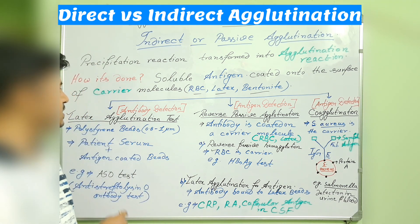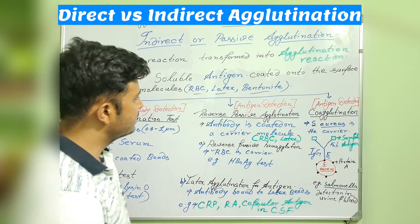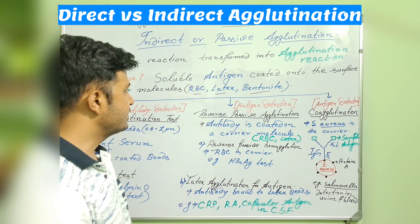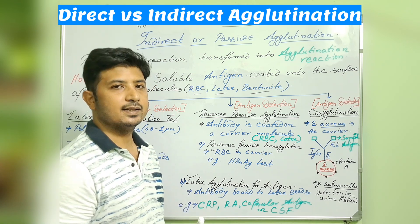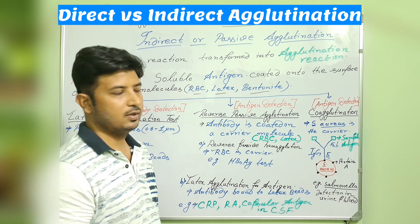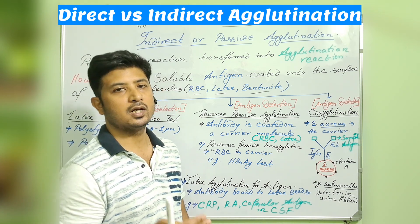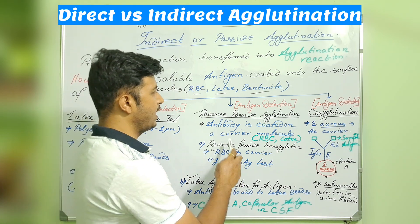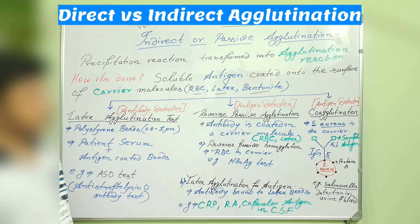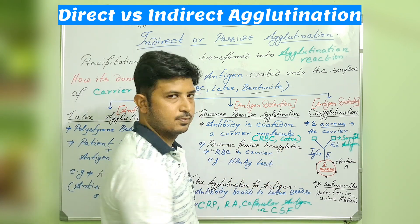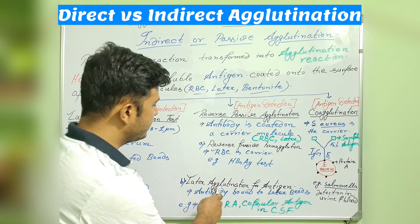In the reverse passive agglutination process, the antibody is coated onto a carrier molecule — whereas in direct cases the antigen interacts directly with the antibody. This can be divided into two processes: reverse passive haemagglutination, where RBC is used as a carrier with antibody coated on it; and latex agglutination for antigen, where latex beads are used with antibody coated to detect antigen.